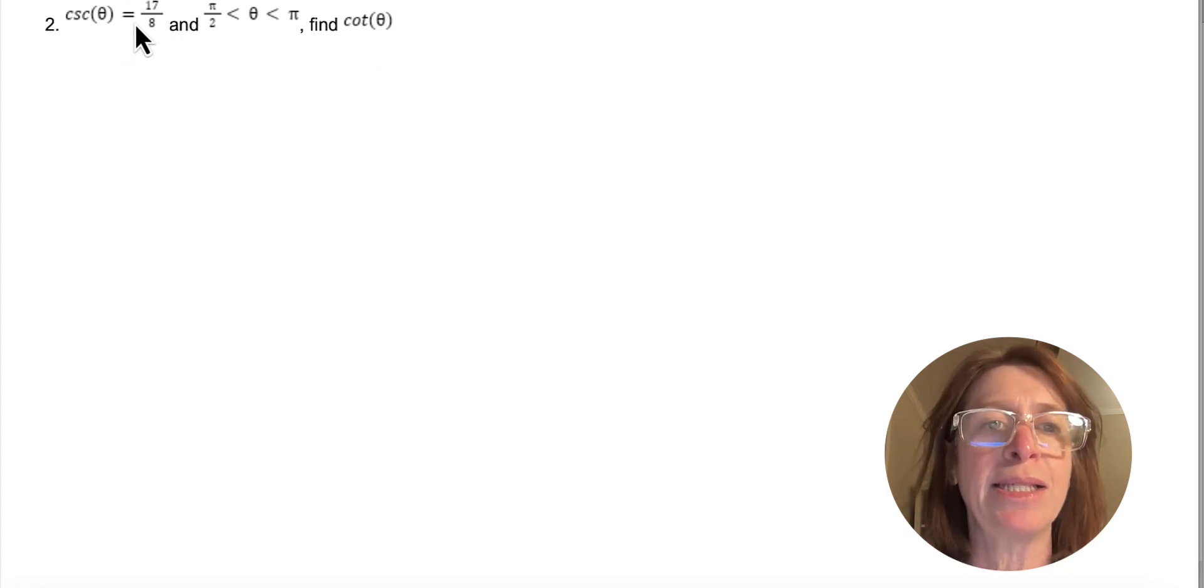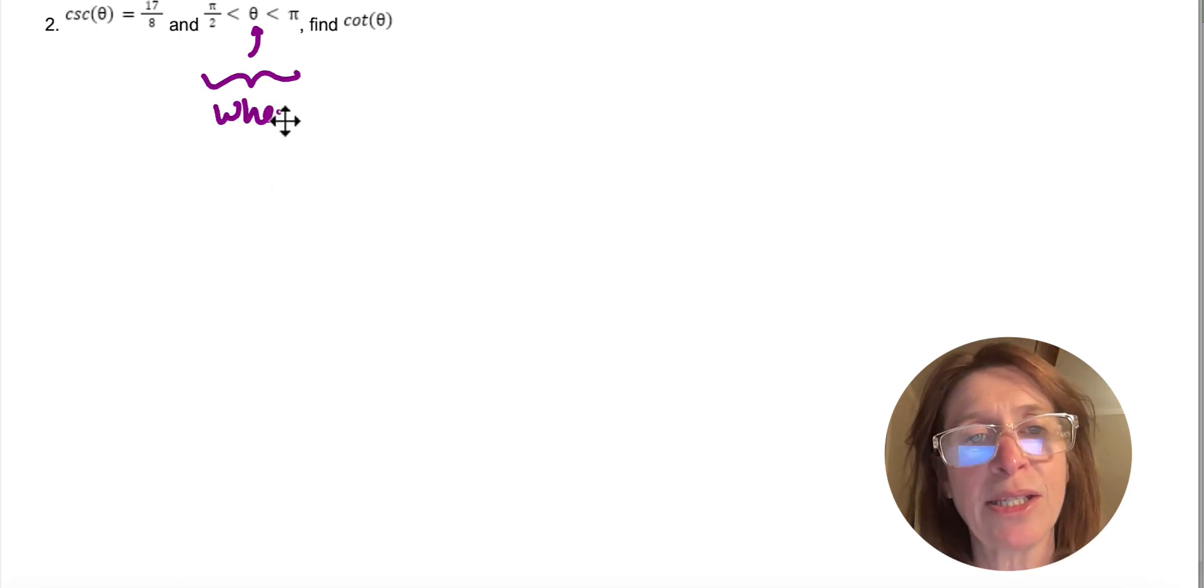So you're told that cosecant theta is equal to the ratio 17 over 8, and then you're also told that theta is between pi and pi over 2. So this is telling me where my triangle exists, where the triangle lives.